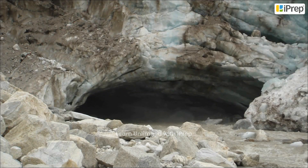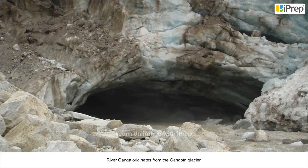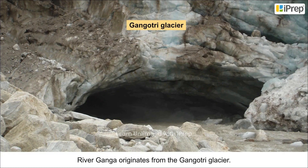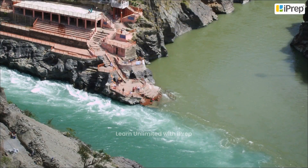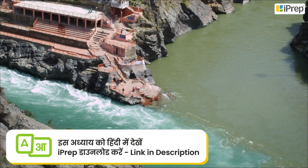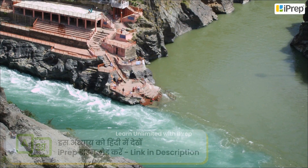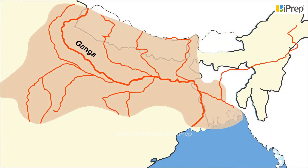The Ganga River System: River Ganga originates from the Gangotri Glacier. It is joined by the Alaknanda at Devprayag, wherefrom it takes on the name Ganga. Its major Himalayan tributaries are rivers Yamuna, Ghagra, Gandak and Kosi. Chambal, Betwa and Son are its major tributaries from the Peninsular Uplands.